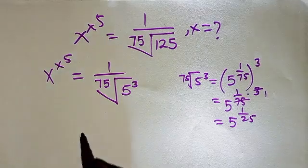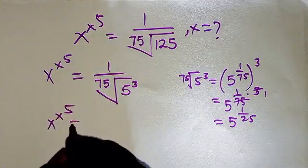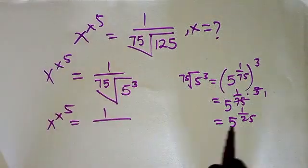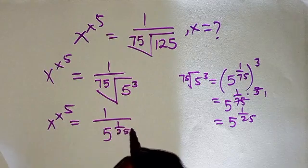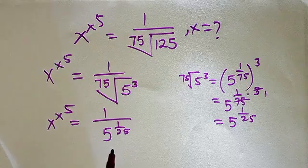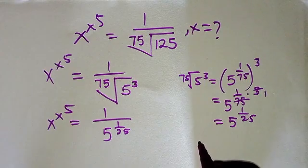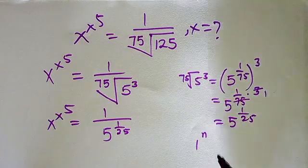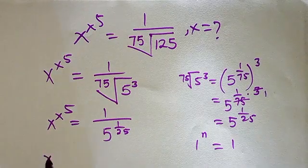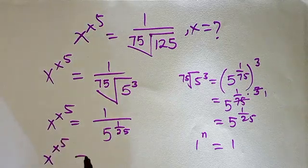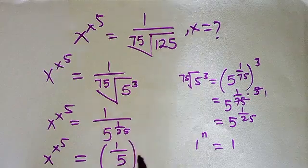So therefore, this entire denominator means x to the power x to the power 5 equals 1 over 5 raised to the power 1 over 25. Now I want you to recall that 1 raised to the power of any number n still equals 1. So we can rewrite this as 1 over 5, raised to the power 1 over 25.